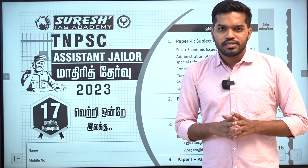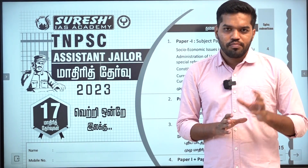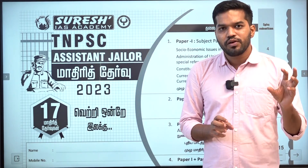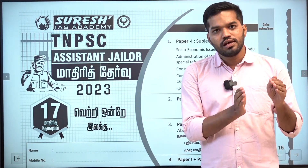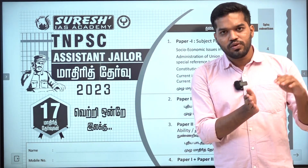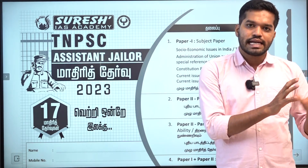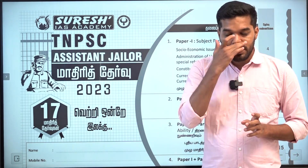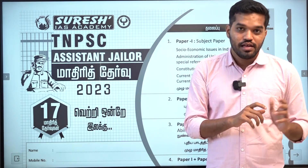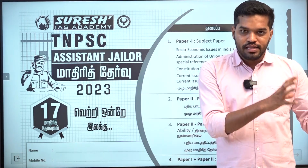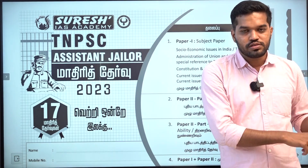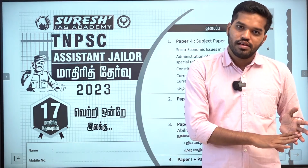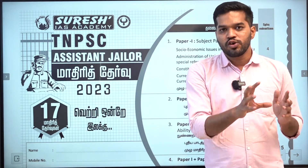For this syllabus, you have two different people. In the paper, in the main syllabus, we have 80% in the main syllabus. In the main syllabus, there are socio-economic issues, admin, current affairs, and human rights.